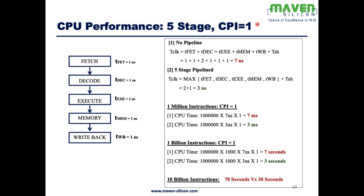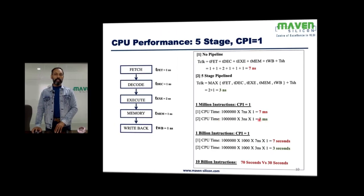If we make CPI equal to one, a multi-stage pipeline processor will always be better than a regular processor. For no-pipeline, the clock period is the sum of all propagation delays plus setup and hold time — six nanoseconds plus one nanosecond equals seven nanoseconds. For the five-stage pipeline, the maximum propagation delay is the execute stage at two nanoseconds, plus setup and hold time gives three nanoseconds. With CPI of one for both, one million instructions takes seven milliseconds for the regular processor but only three milliseconds for the five-stage pipeline.